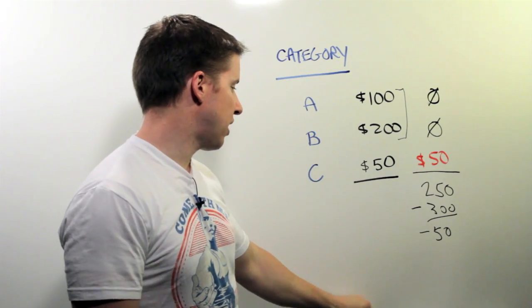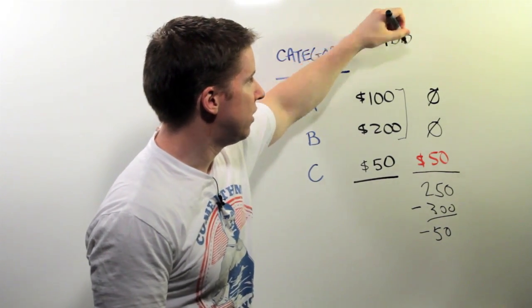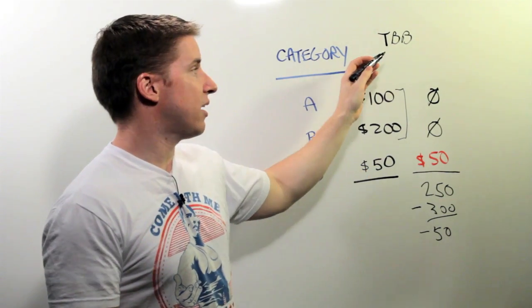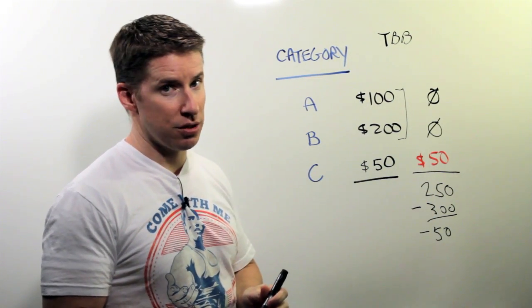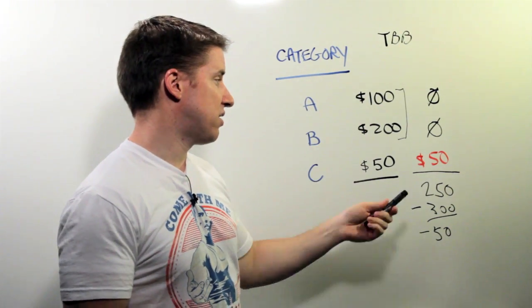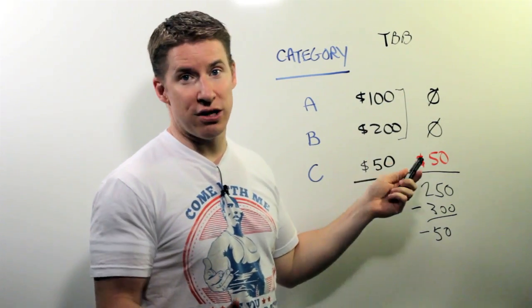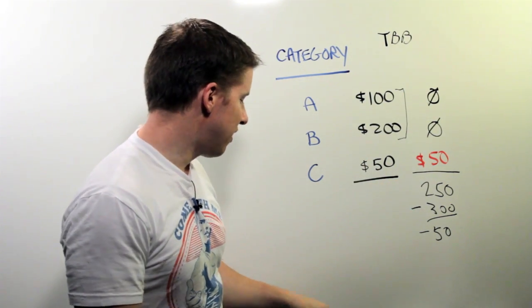With that to be budgeted up at the top, right? We call it TBB for short, but to be budgeted up at the top, we deduct whatever you've overspent in those categories with cash. We deduct that from your next month's to be budgeted. We eventually say, hey, you need to pay that back so that the $100 and $200 are actually correct.